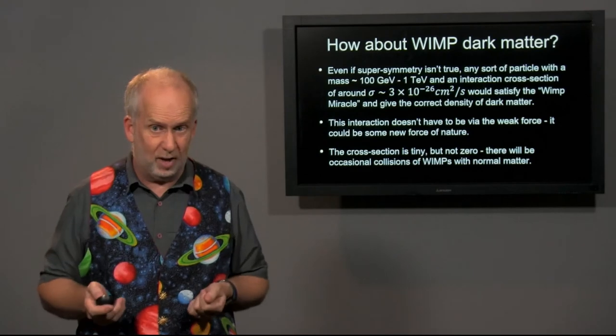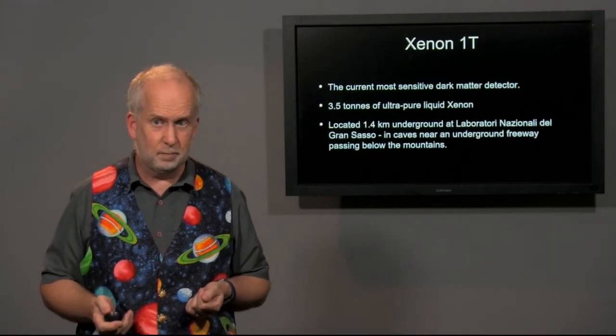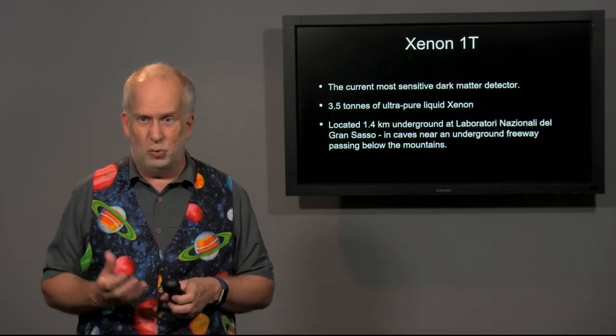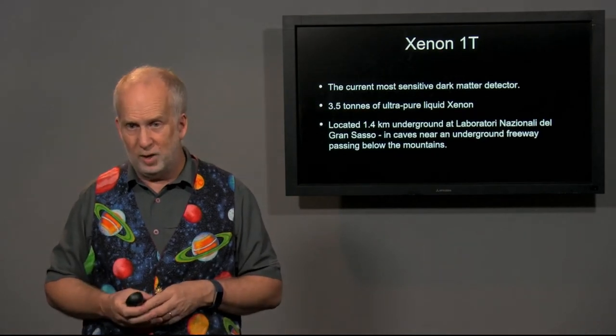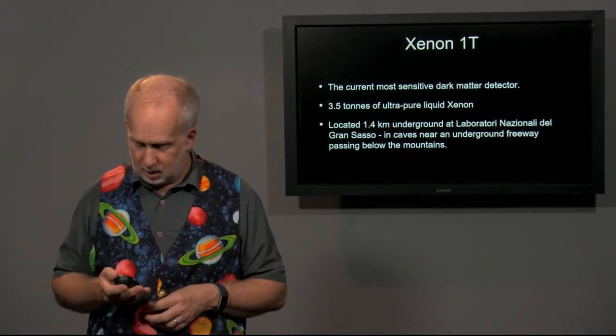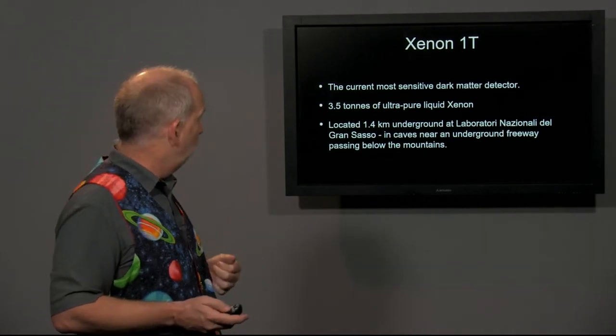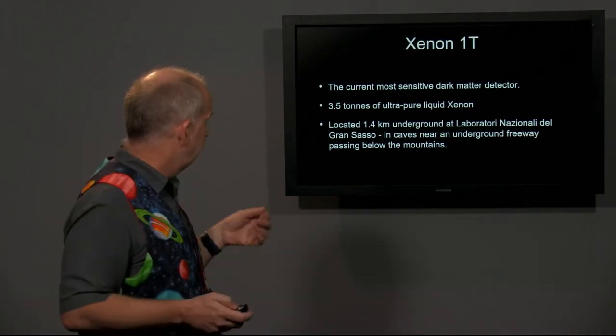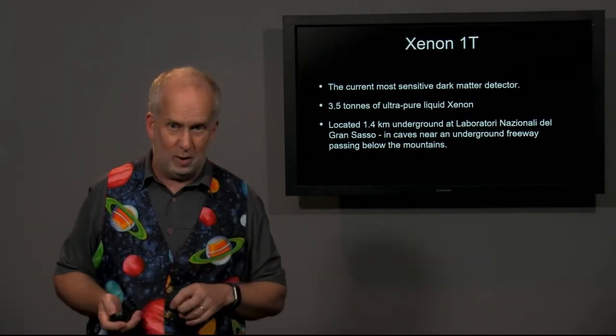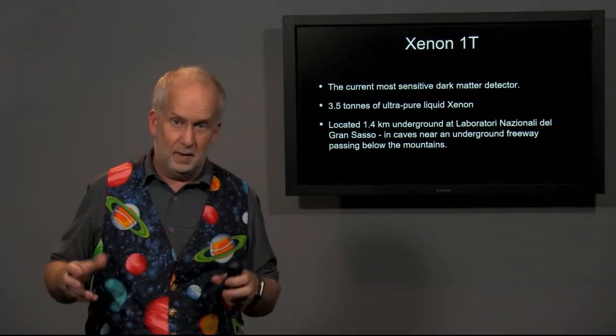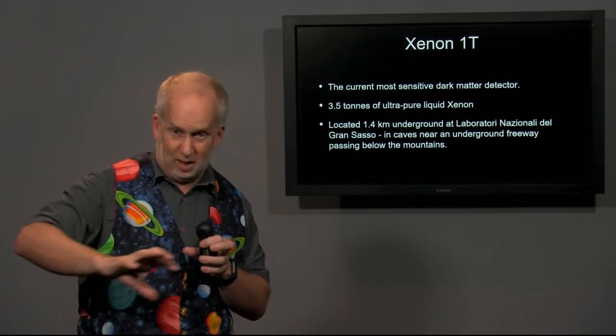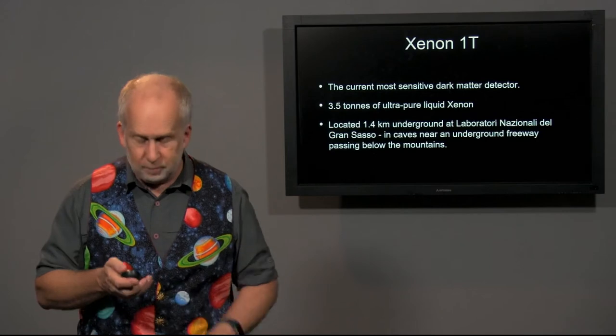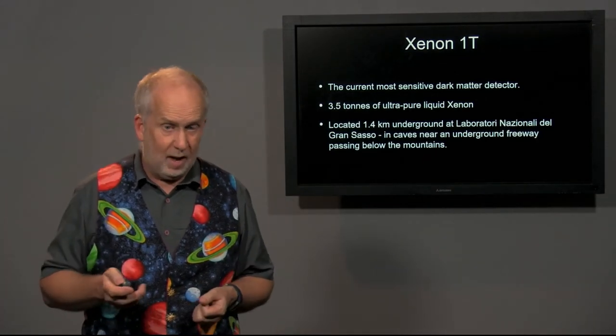So can we actually see, does WIMP dark matter exist directly? Remember, these particles are, in principle, flying through our bodies as we stand here. And there have been a whole series of experiments, and just within the last few years they've started reaching really interesting sensitivity levels when they can start ruling in or ruling out dark matter detection. The current most sensitive is the Xenon 1T. It's actually three and a half tons at the moment of ultra-pure liquid xenon, located 1.4 kilometers underground in the Gran Sasso laboratory in Italy.